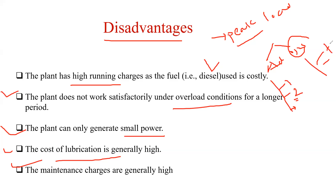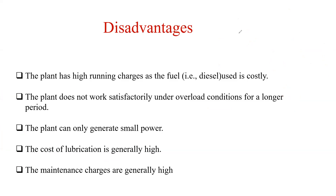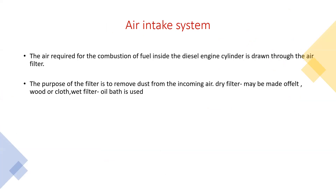The second disadvantage is: it cannot survive with overload conditions — if there is any emergency overload, it cannot survive with the overload conditions for longer durations. These are some points with respect to peak load power plant. If you understand the concept of peak load and base load, you can write down the advantages and disadvantages of your diesel power plant and your nuclear or thermal power plant also. Try to understand the concept of peak load and base load power plant. In this way, we complete the diesel power plant.